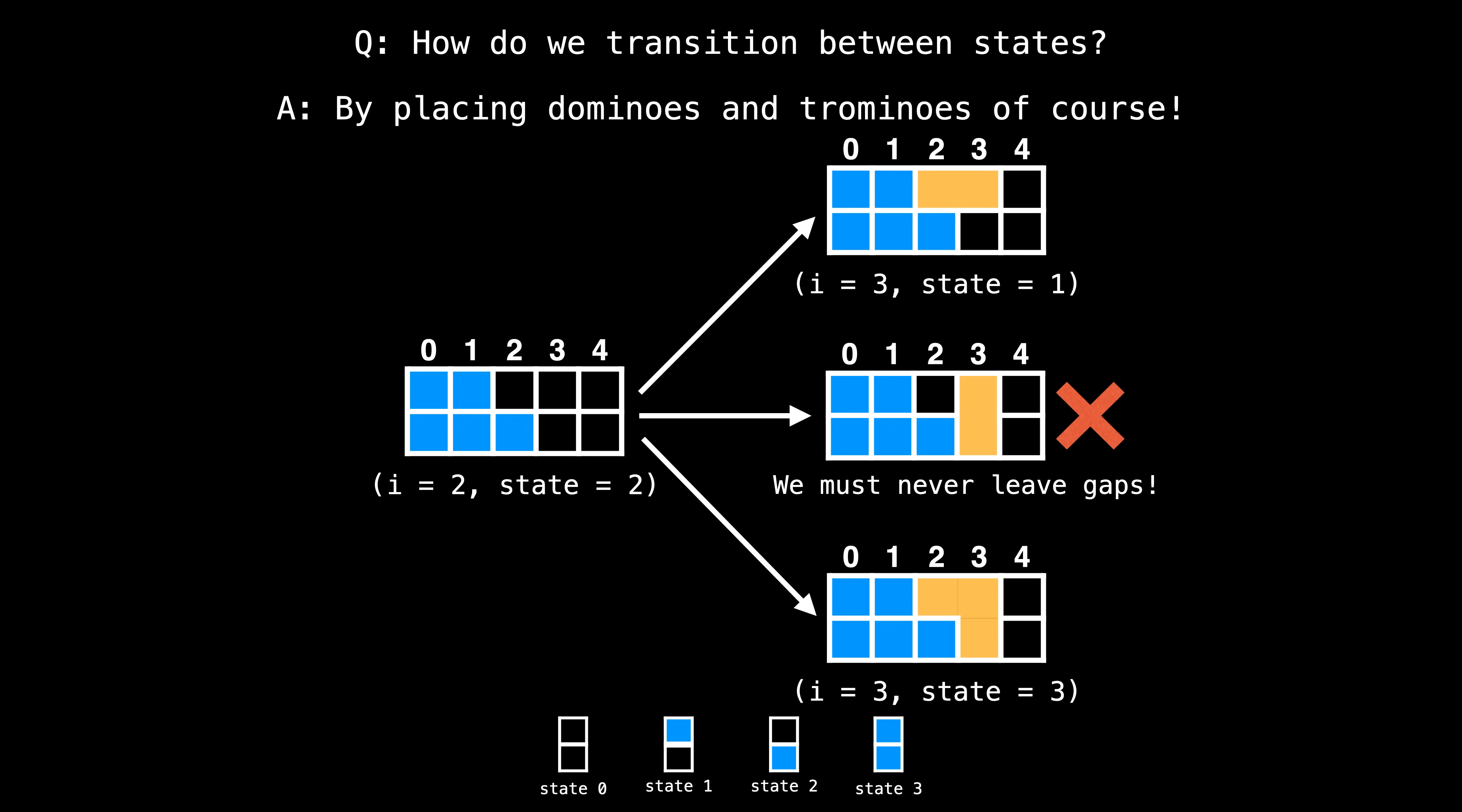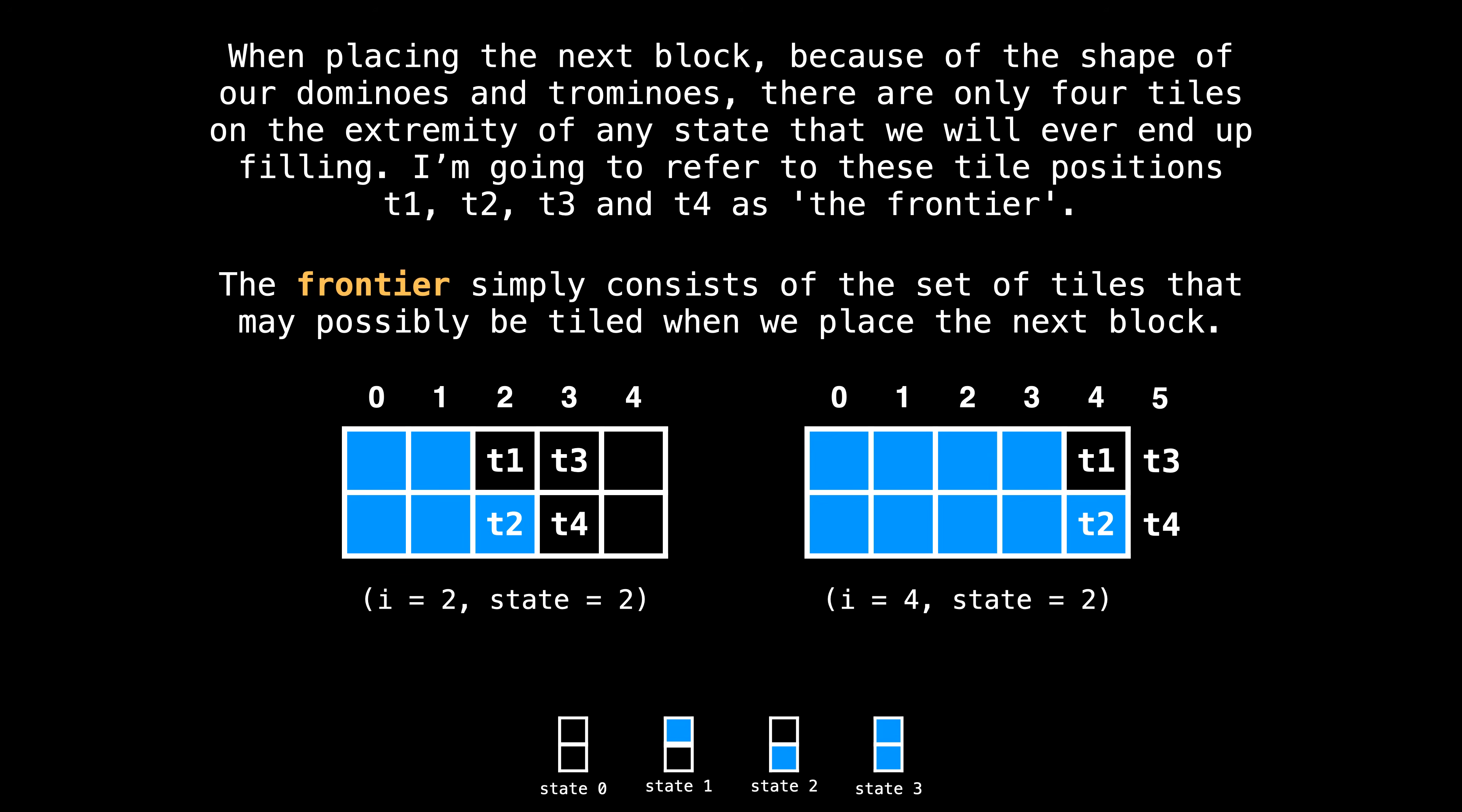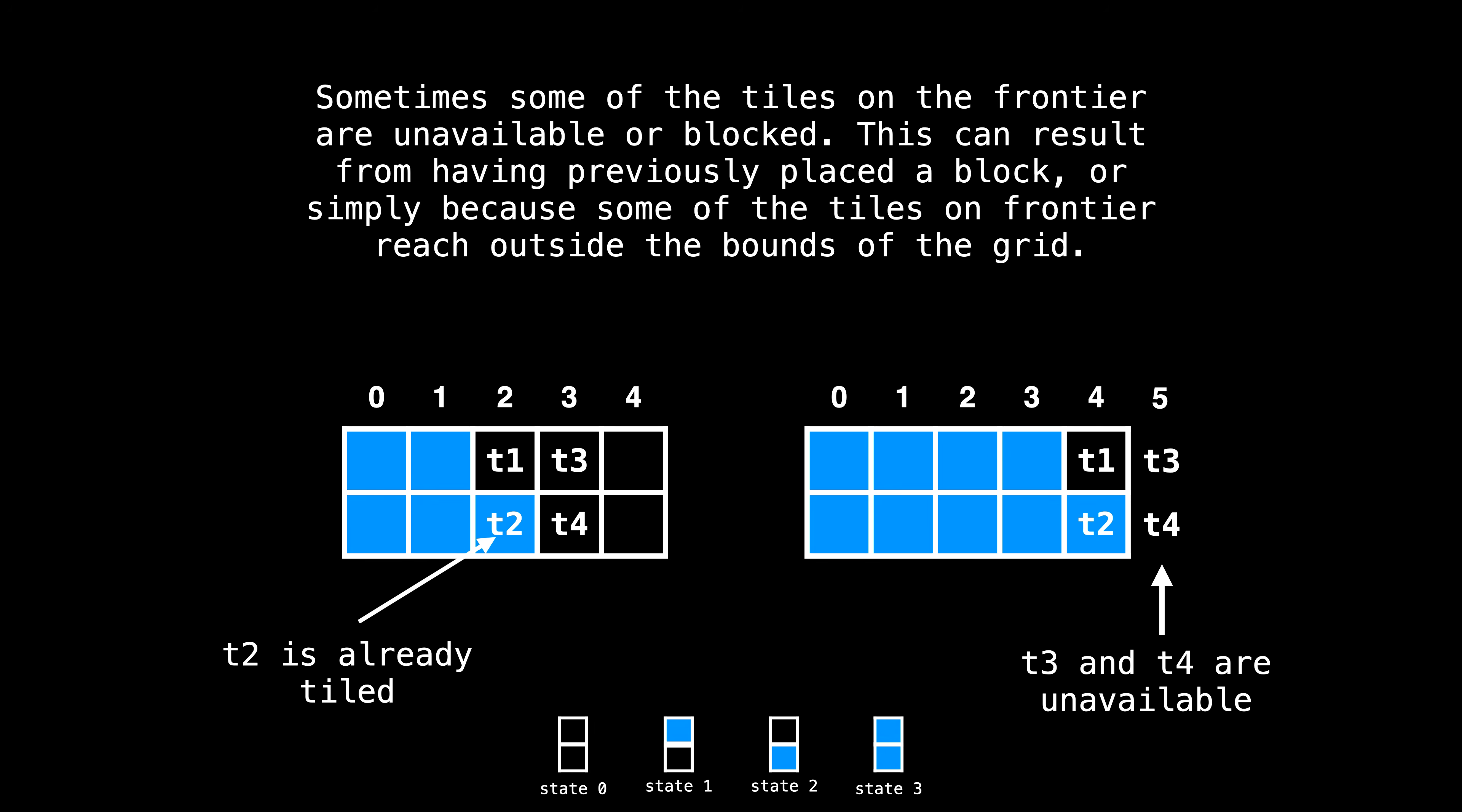Now that we understand how we are representing our partial states, how do we transition from one partial state to another partial state? Unsurprisingly, it's by placing dominoes and trominoes. However, as we do so we need to make sure that we don't leave any gaps as we place blocks. In the example on this slide, the top and the bottom transitions are good. But the middle transition leaves a gap in the grid, which we do not want. When placing the next block, because of the shape of our dominoes and trominoes, there are only four tiles on the extremity of the state that we ever end up filling. I'm going to refer to these tiles as t1, t2, t3, and t4 as the frontier. The frontier simply consists of the tiles that may possibly be tiled when we place the next block. Sometimes some of the tiles on the frontier are unavailable or blocked. This can be the result of having previously placed a block or simply because part of the frontier reaches outside the bounds of the grid.